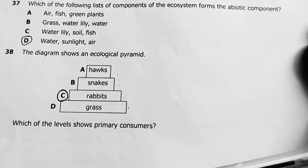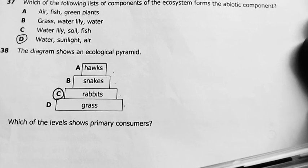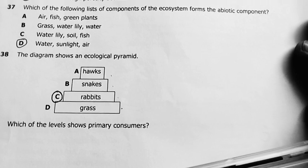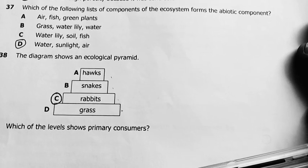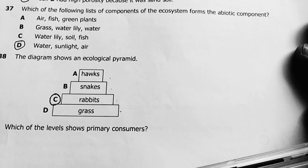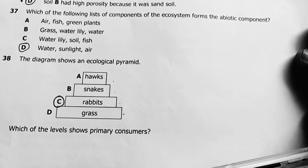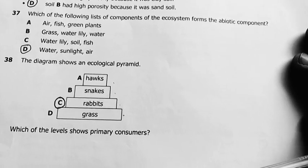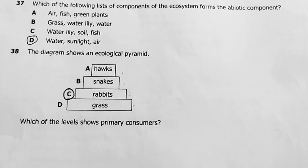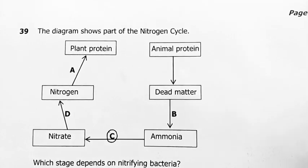Number 38: the diagram below shows an ecological pyramid. Which of the levels shows primary consumers? Rabbits. Producers are grass, and whoever eats the producers — like whoever eats plants — becomes a primary consumer. So my best answer was rabbits, as rabbits are primary consumers.